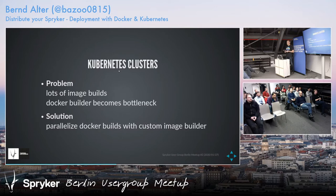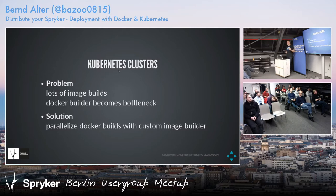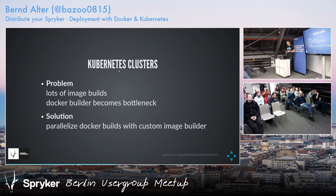We optimized this so images didn't have to be rebuilt every time, but initially we built our own image builder. We created this in Go and built basically a proxy — because in a Kubernetes cluster by default you cannot have more than one Docker build process responsible for building images. Our proxy allowed multiple Docker build processes in the background, distributing the builds across them. This solved the issue and we could build as many images as we wanted.